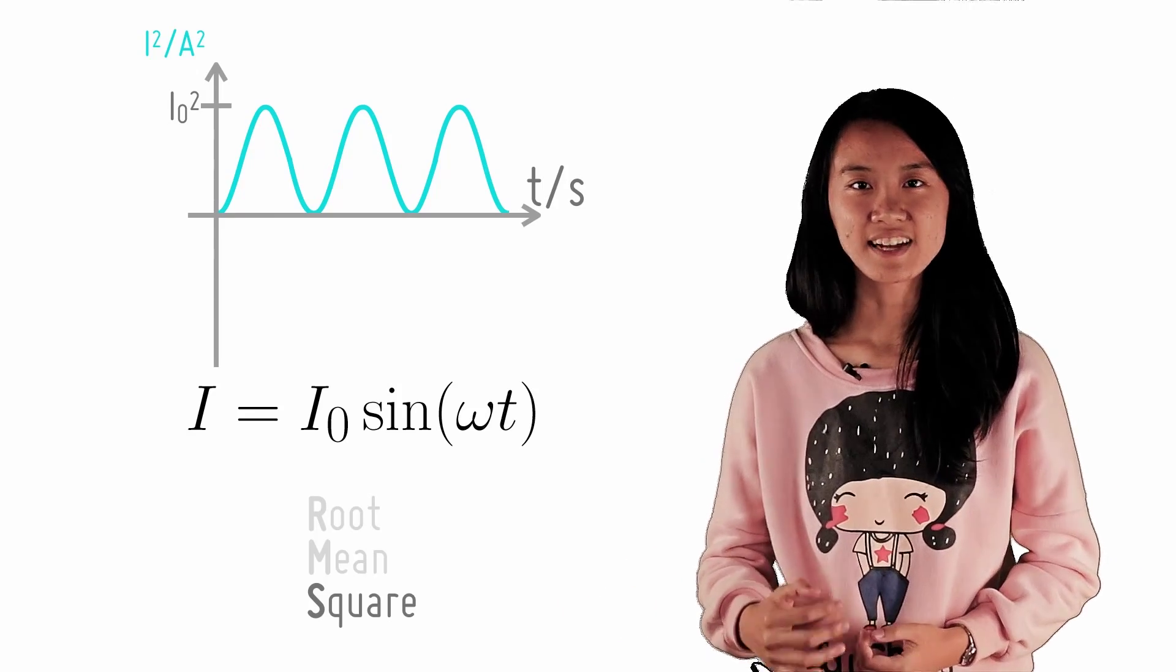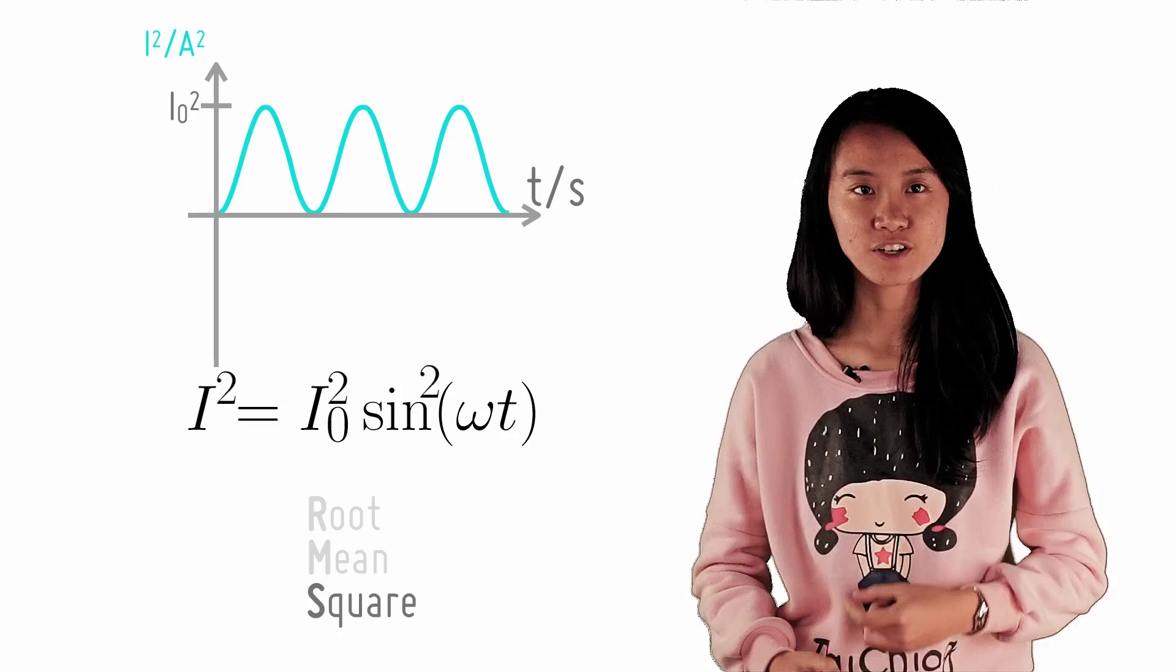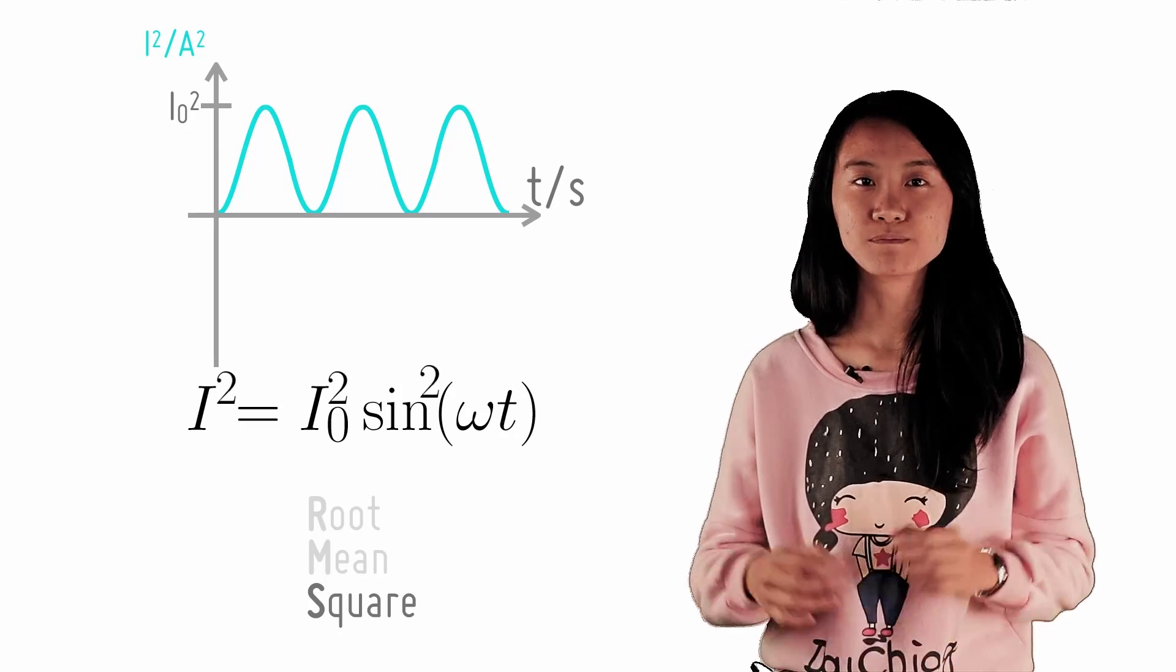We can algebraically write this graph as I² = I₀² sin²(ωt) by simply squaring both sides of the equation.